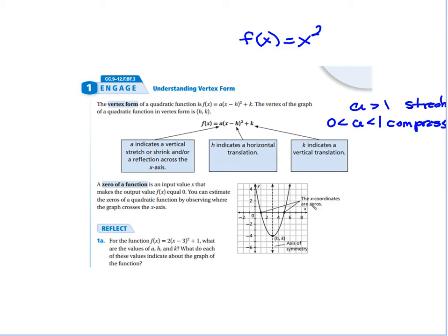The k tells you your vertical translation, that's going to be up or down. And that's exactly the same as the sign. So if it's a positive one, it's going to go up. If it's a negative one, it would go down.